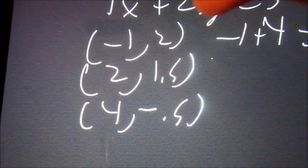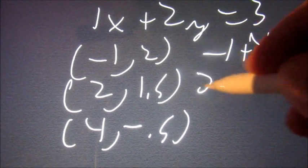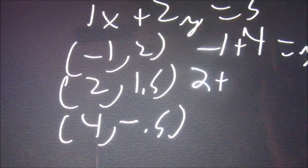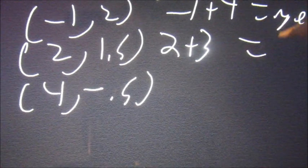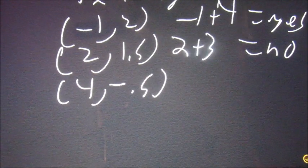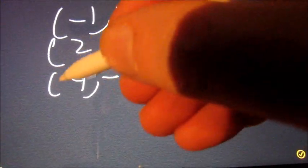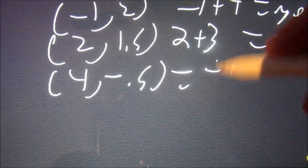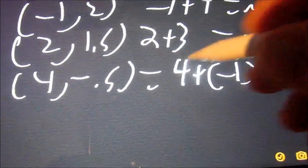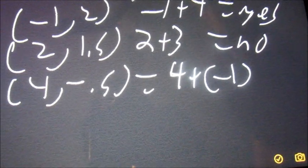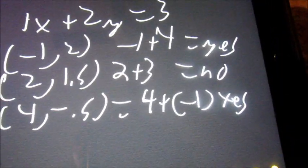For 2, 1.5: 2 plus 2 times 1.5 is 3, that equals 5, so the answer is no because it doesn't equal 3. And then for 4, negative 0.5: 1 times 4 is 4, and 2 times negative 0.5 is negative 1. 4 minus 1 equals 3, so the answer is yes.